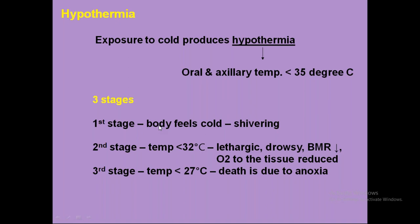In stage one, the body feels cold and shivering occurs. Shivering is a normal mechanism — muscle shaking produces heat, so the body tries to generate heat through shivering. This is similar to the chills seen in fever from malaria or typhoid, where the body tries to increase heat to counter cold. Stage two occurs when temperatures fall below 32 degrees centigrade: the person becomes lethargic and drowsy, basal metabolic rate decreases significantly, and oxygen delivery to tissues is reduced as the body conserves energy.